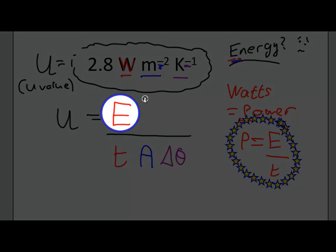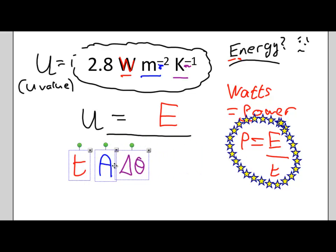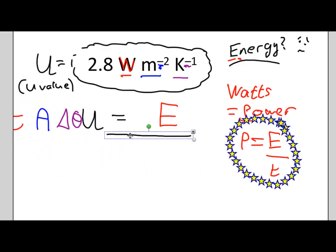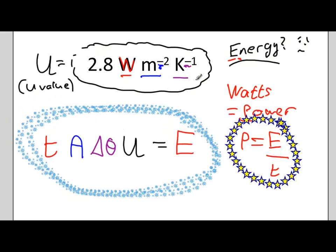Now we just have to kind of rearrange it to get energy by itself. So I take all the stuff at the bottom there, I'll take all that stuff at the bottom, I'll just move it over here. So we get the formula, the time times the area times the change in temperature times the U value equals energy. There we go.